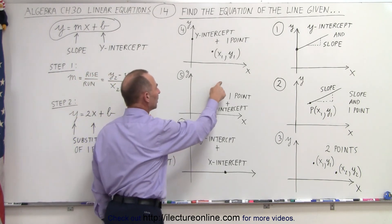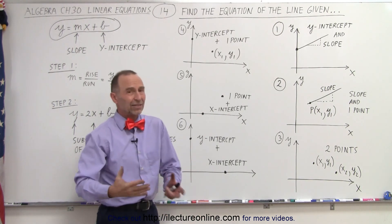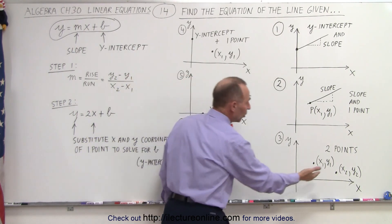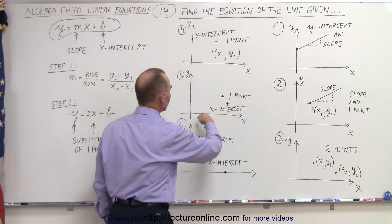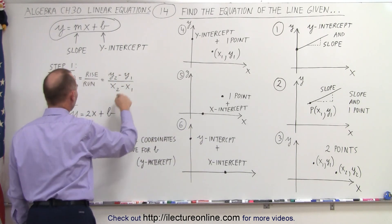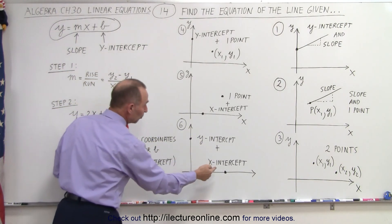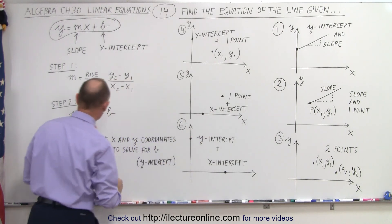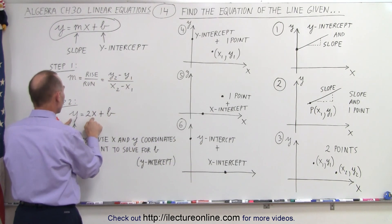What if they give you a point and the x-intercept? Well, then the x-intercept simply becomes your second point. You're going to use the two points to first find the slope, then once you have the slope, you take one of your two points, it could be the x-intercept, and you plug them in for x and y.